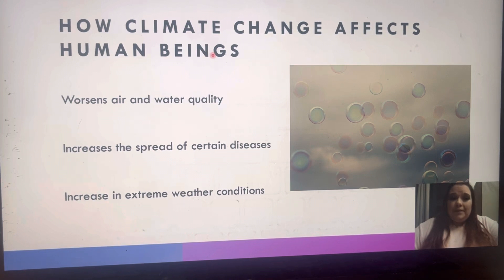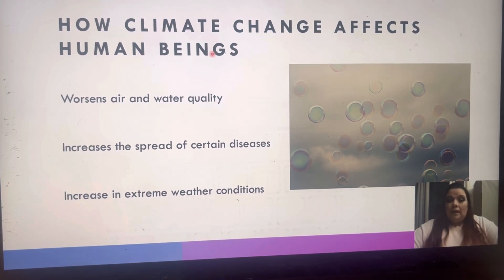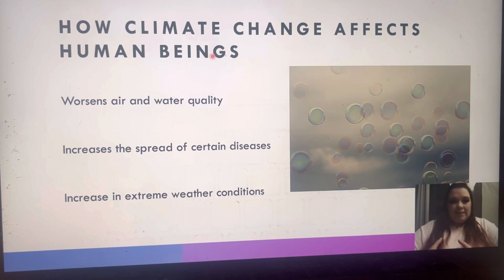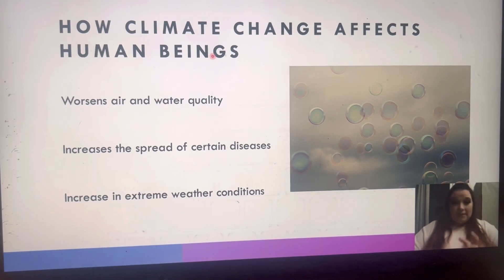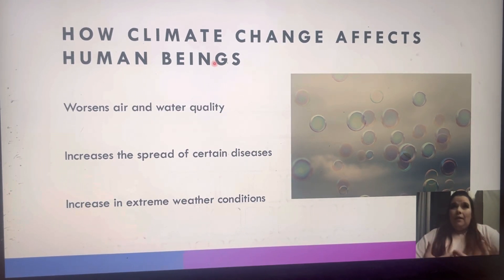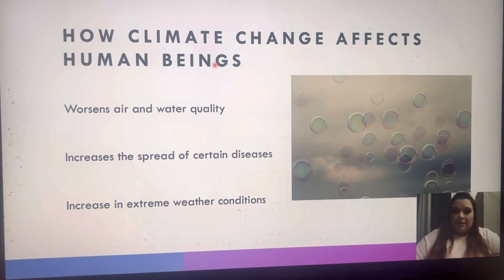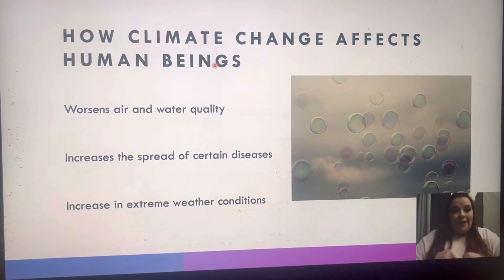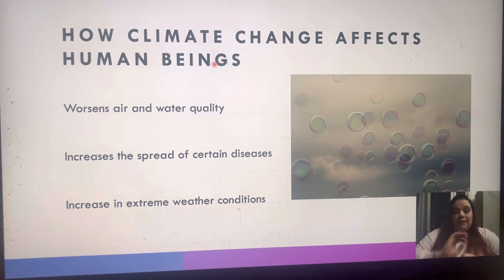The other way that climate change affects human beings is it increases the spread of certain diseases. Take COVID for example. Disease in general, or bacteria, tends to live in dark, moist areas. So when things become drier and the balance of our body gets disrupted, that's what makes us more vulnerable. That's why whenever COVID happened, people who were more frail and sick with other conditions were the first to be really affected, whereas people who are more middle-aged and healthy without existing health conditions are relatively safer, at least according to statistics.